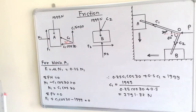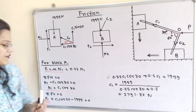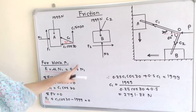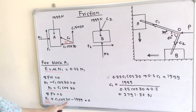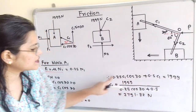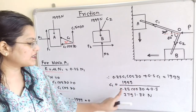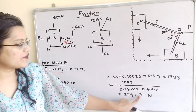Taking the sum of vertical forces equal to zero: F1 + C1·sin30° − 1999 = 0. Substituting F1 = 0.25·N1 = 0.25·C1·cos30°, we get 0.25·C1·cos30° + 0.5·C1 = 1999. Taking C1 as common: C1 = 1999 / (0.25·cos30° + 0.5), which gives C1 = 2791.3 N.